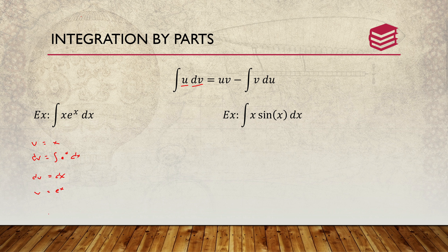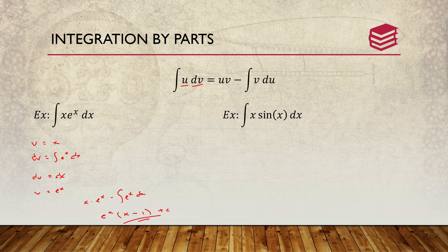Following the procedure u·v minus the integral of v·du, you get x·e^x minus the integral of e^x dx. This simplifies to e^x, giving the final result of e^x(x - 1) + C. That is how you solve that particular example.